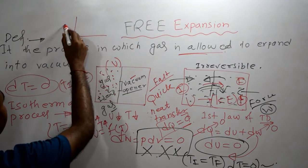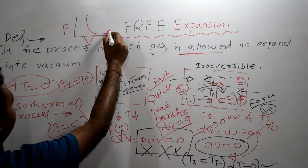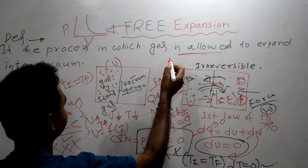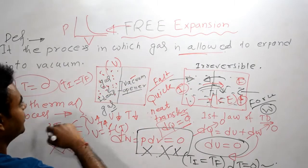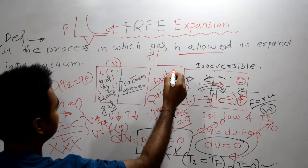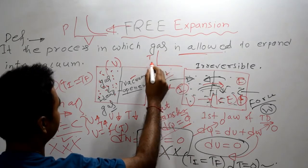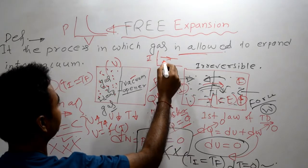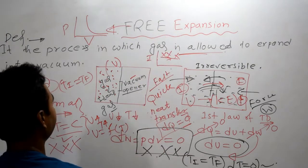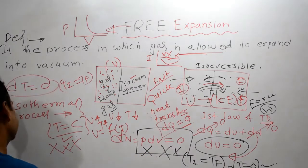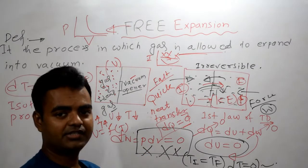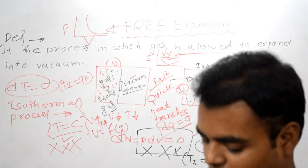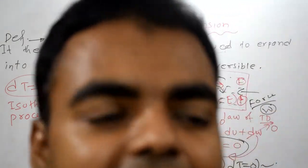Now let me show you the PV diagram for free expansion — you should remember what this looks like. For an isothermal process, temperature remains constant, but for free expansion, temperature first decreases and then increases. I hope you understand the concept of free expansion. We'll meet soon in the next video. Thank you very much for watching. See you soon — bye bye, God bless you all.